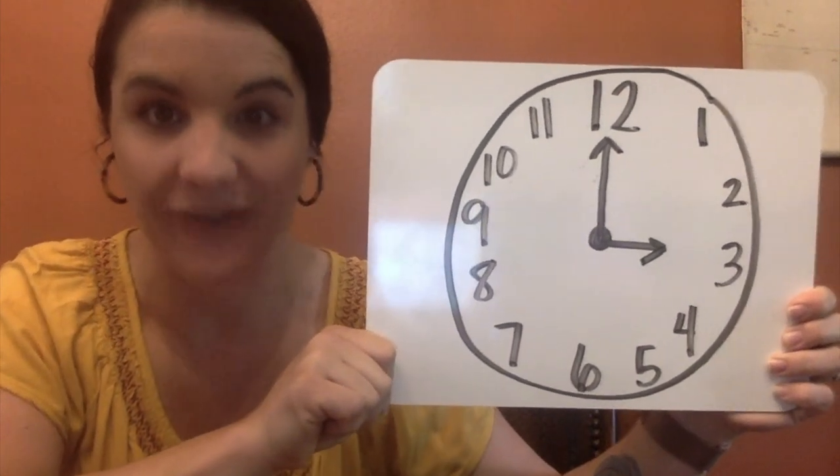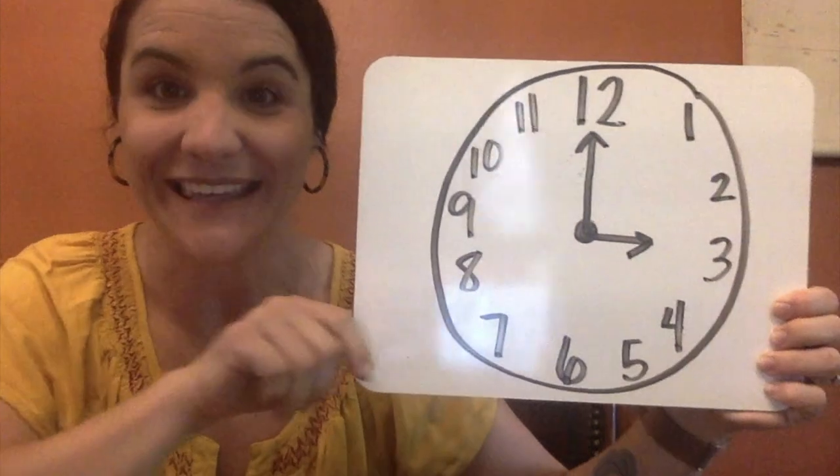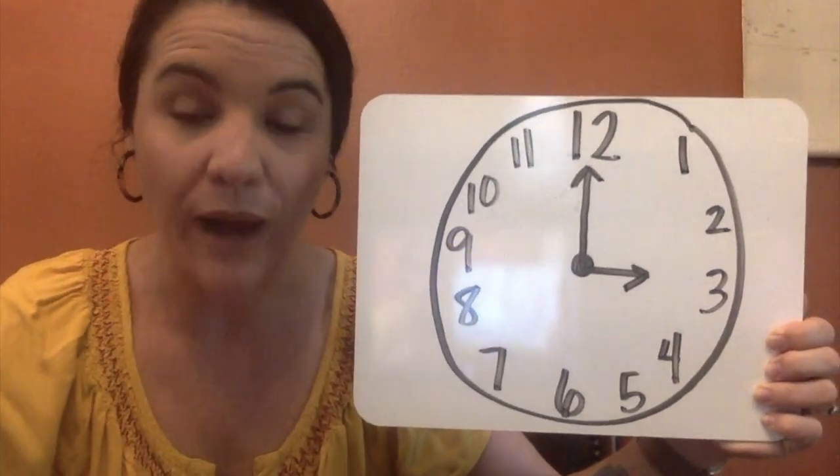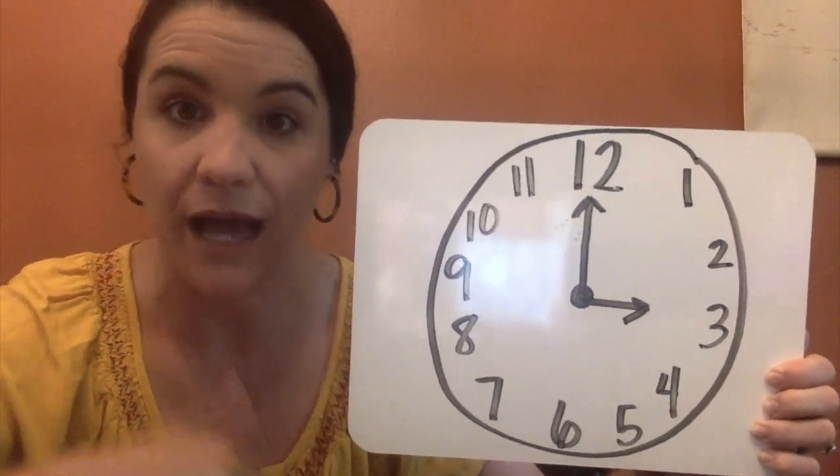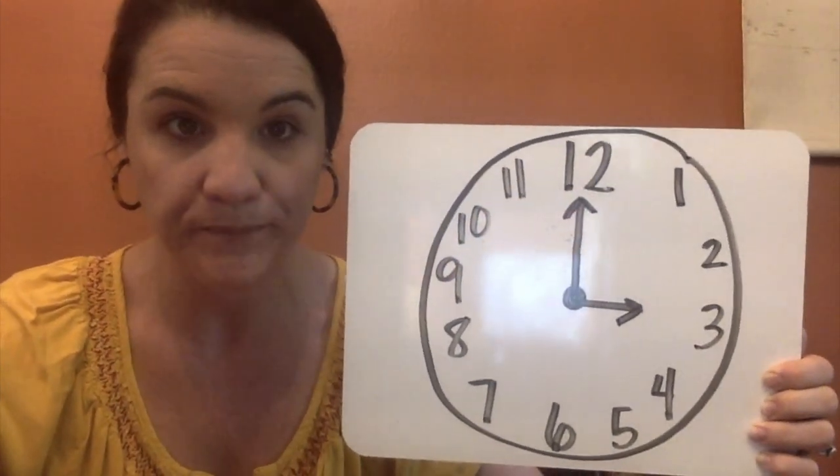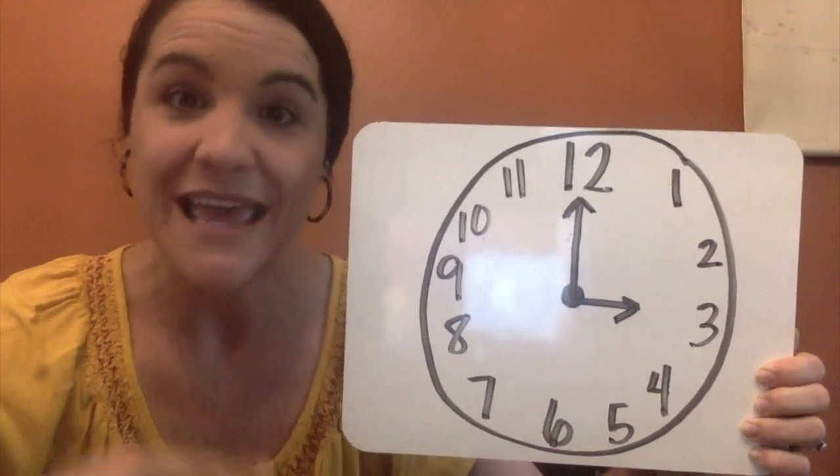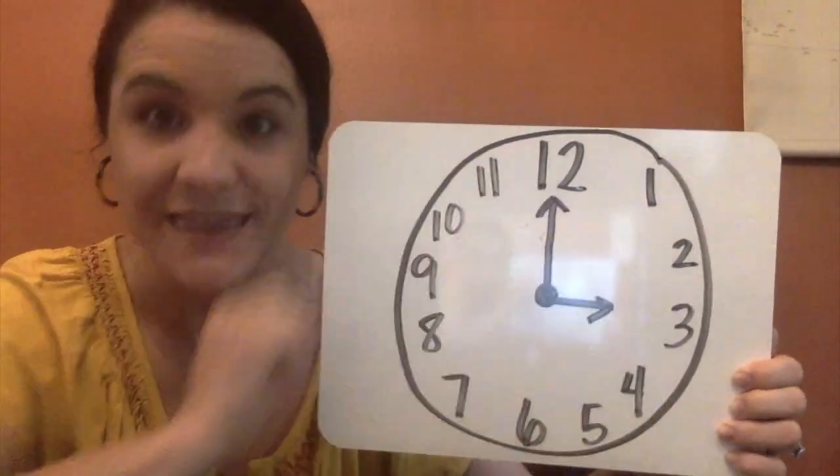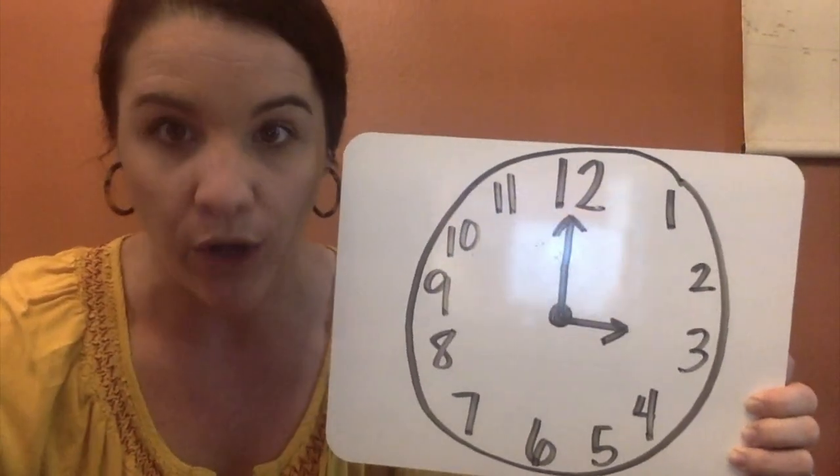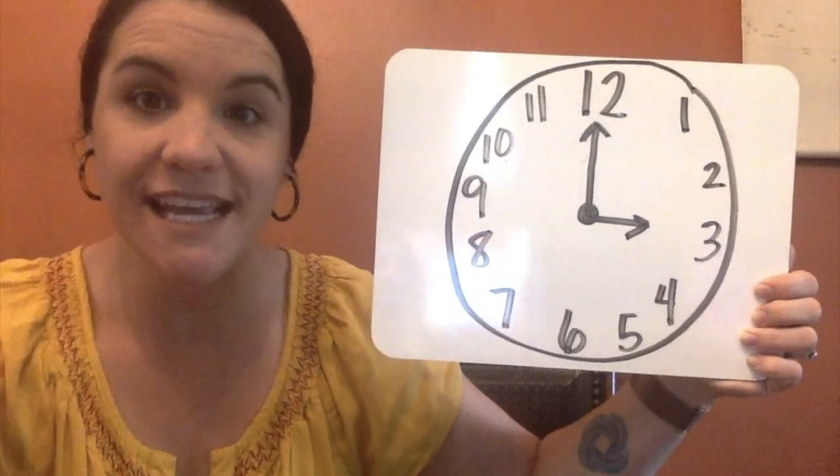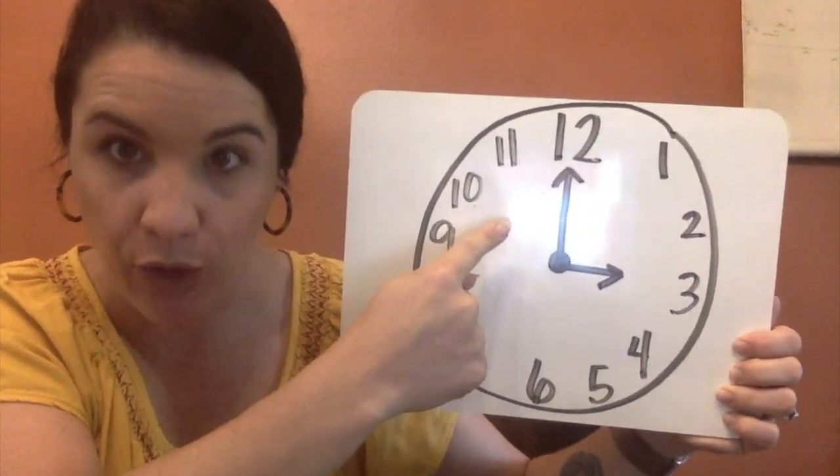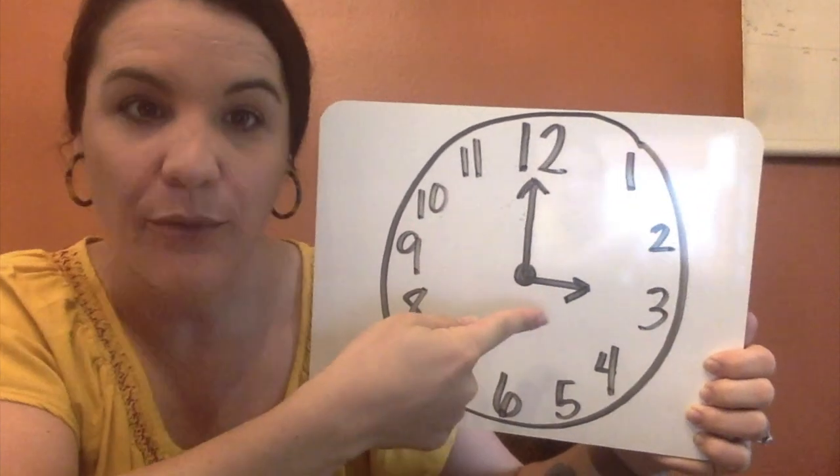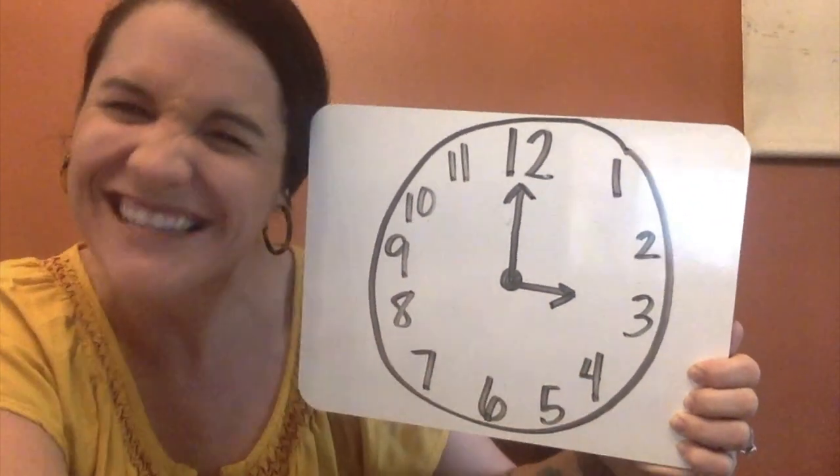So, here we have our first example of an analog clock. Now, what I want us to do is I just want us to look at the clock and talk about some things that we notice. Right now, if you just want to click on the video to pause me, that way you can take a look at the clock and if you're watching this with someone else, you can talk about some things that you notice. If you said that you noticed that there are the numbers 1 through 12, that's absolutely correct and those numbers tell us the hour.